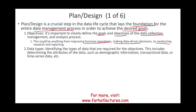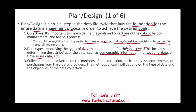The second thing is what type of data am I dealing with? Identify the types of data required to reach my objective. This includes determining the attributes such as demographic information, transactional data, time series, etc. The third thing I have to decide on in the plan slash design step is how am I going to collect this data — deciding on the method of data collection. I can use surveys, experiments, or purchase the data from a third party. The method chosen depends on the type of data I am using and what my objective is.